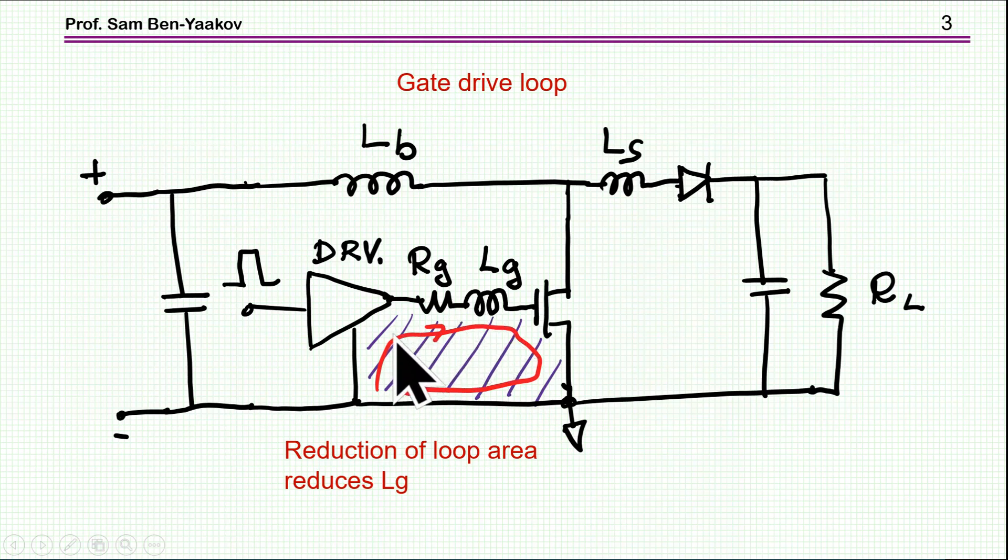So this is the case in which we have a loop, which is a continuous loop, you might say, uninterrupted. There is a current going during the ON one direction and during the OFF the other direction. So this is a rather simple case.